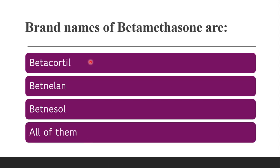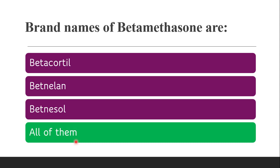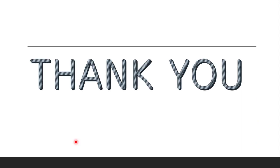Next question: brand names of betamethasone — betamethasone is again a glucocorticoid. Whether it is Betacortil, Betnelan, Betnesol, or all of them. The correct answer is all of them. Famous brands of betamethasone include Betacortil, Betnelan, and Betnesol. With this we finish the MCQs from Steroidal Drugs Part 2. Thank you.